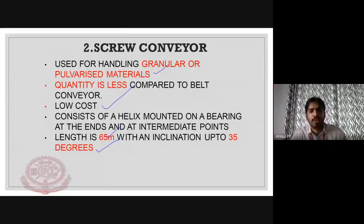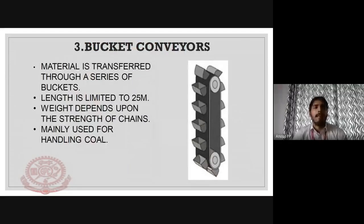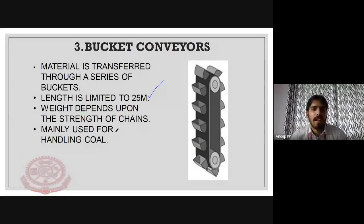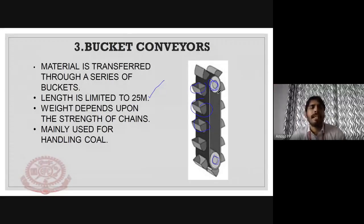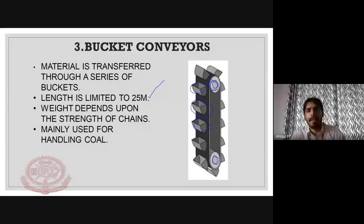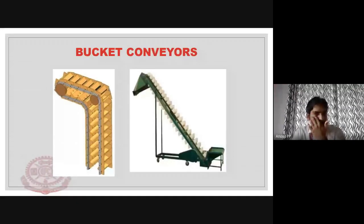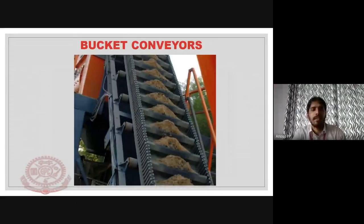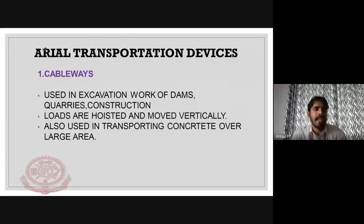The bucket conveyor can be up to 25 meters in length. Material is transferred by a series of buckets. Bucket conveyors are used in the food processing industry and manufacturing industries where materials need to be transferred in buckets along the conveyor path.